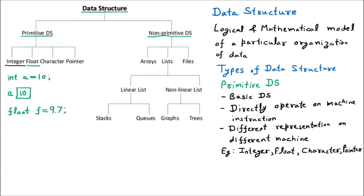For float, it will reserve a block in memory and this block will be given the name 'f', and it will contain the value 9.7. If we use the character type, we use 'char c'. A character contains values like a, b, c — small or uppercase characters. Let us suppose we are taking uppercase character 'A', represented in single quotes. It is going to reserve a memory block named 'c' and it will hold the character 'A'.